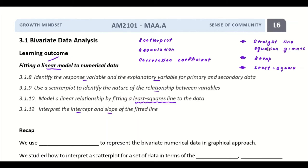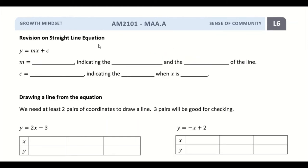Let's start with the revision on straight line equations. Turn to the last page of your handout. For straight line equations, the general equation is y = mx + c. The m represents the gradient. From the value of the gradient, we can find out the direction of the straight line — positive or negative — and the gradient also tells us how steep the line is.